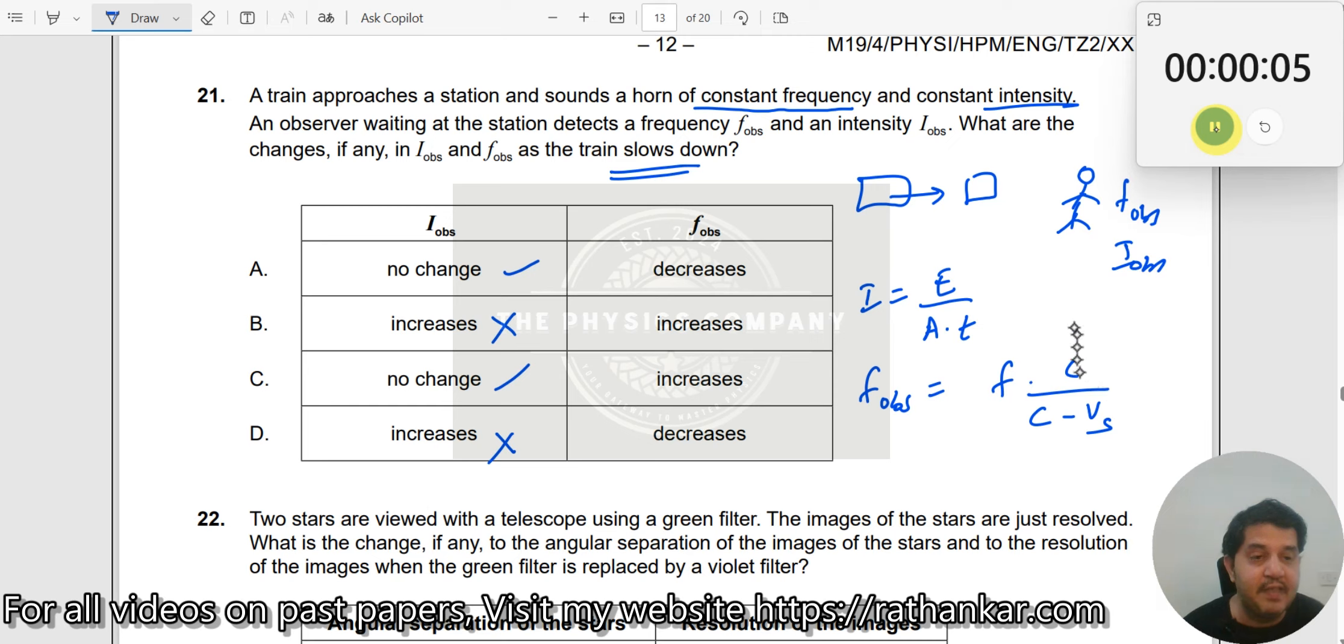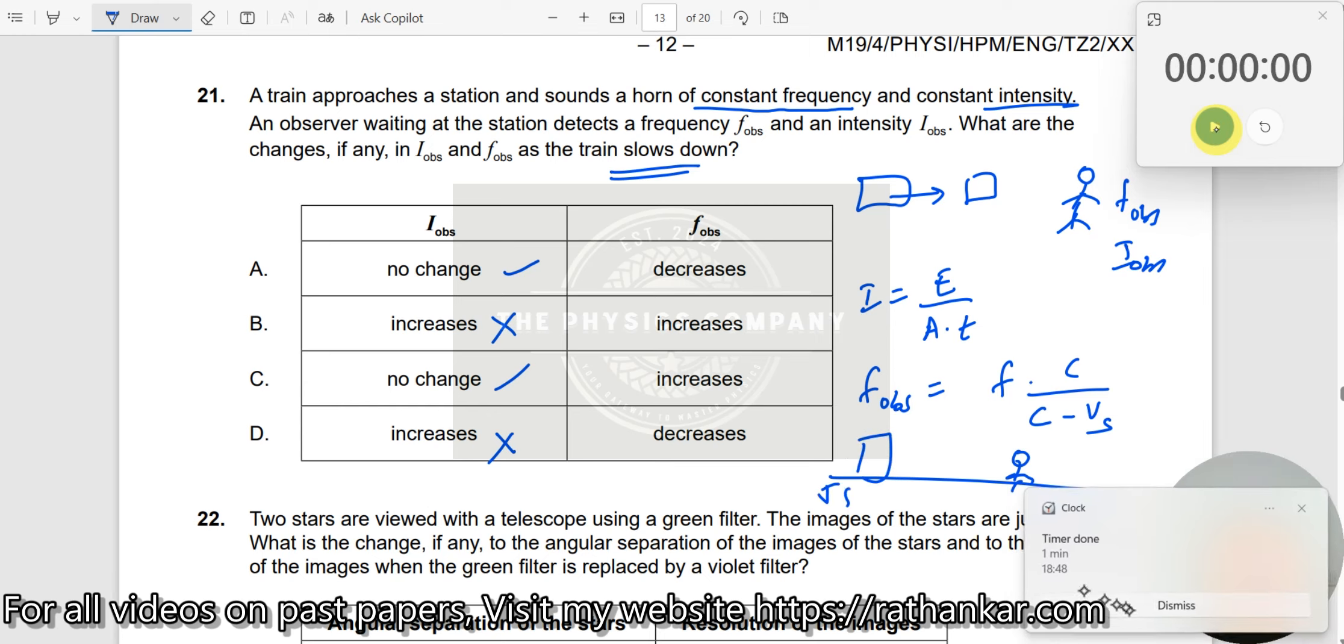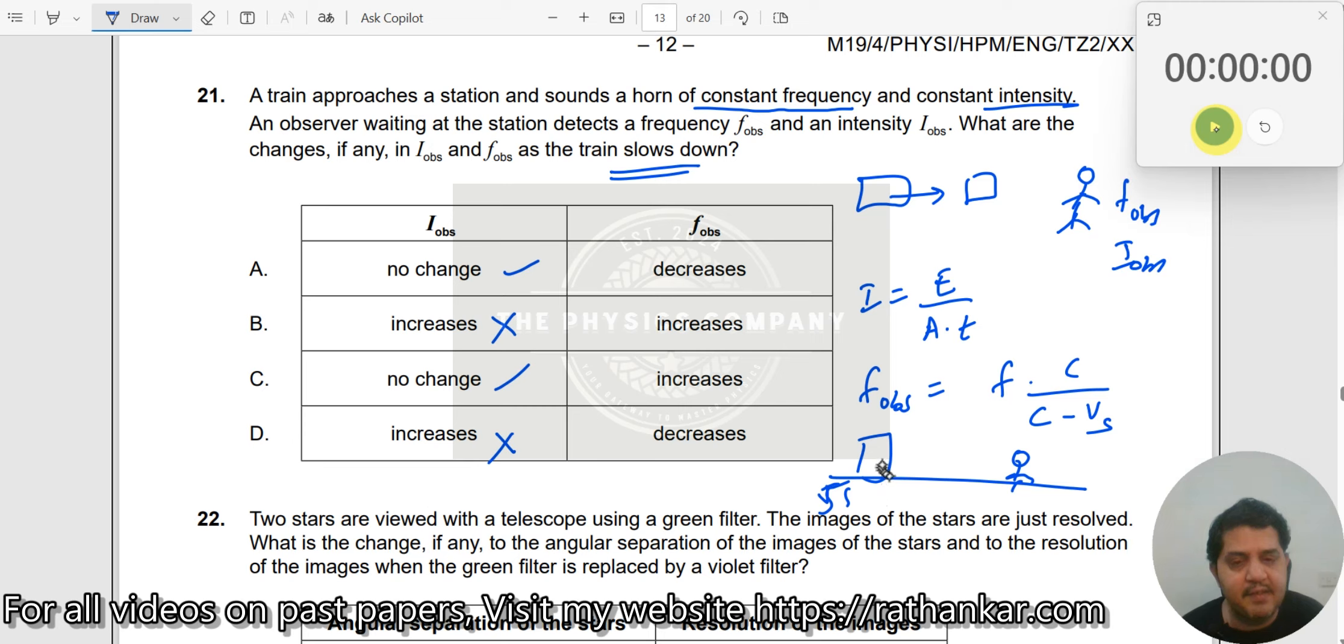This initially, maybe let us consider an example like this. The observer is standing here. At T equal to 5 seconds, you get some frequency. The speed of the train is something like, let us say, 10 meter per second. At T equal to 2 seconds, when it is approaching here, the speed of the train is something like around 4 meter per second.